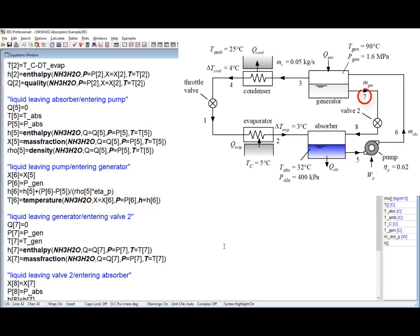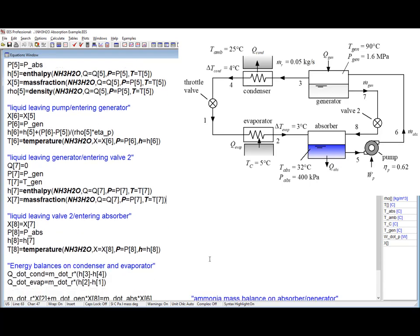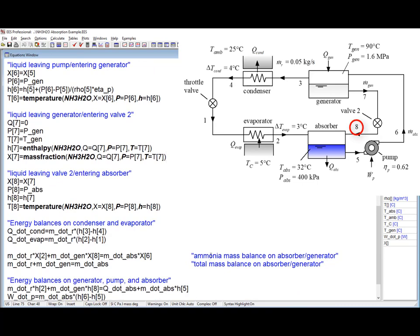The liquid leaving the generator at state 7 is at the generator temperature and pressure and its saturated liquid. So its state is going to be fixed by P, T, and Q. This liquid passes through a valve where it is throttled to the absorber pressure. And the mass fraction and the enthalpy can't change as you flow through that valve. And therefore its state is going to be fixed by X, P, and H.